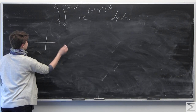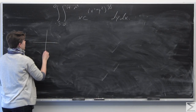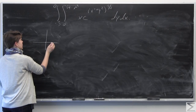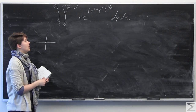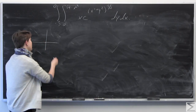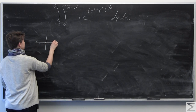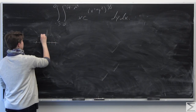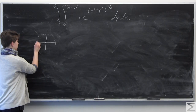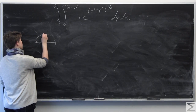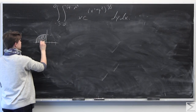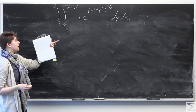We'll go ahead and graph these bounds of integration. From y equals 0 to y equals square root of 9 minus x squared, we have the positive hemisphere of the circle of radius 3. And we know that x is from negative 3 to 0, so we're just going to have this overlapping region — this quarter circle. We need to find this area using this integral.